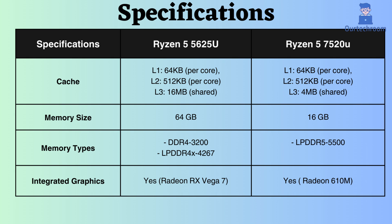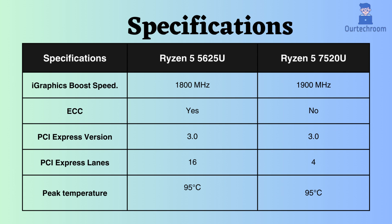Both of these processors support integrated graphics. The maximum frequency for graphics in the Ryzen 5 7520U is greater than that of the Ryzen 5 5625U. Additionally, the integrated graphics in the Ryzen 5 5625U have twice the number of cores, providing better performance in light gaming and video playback.